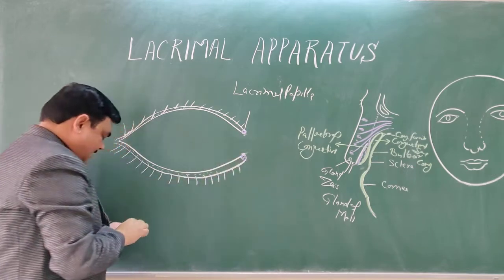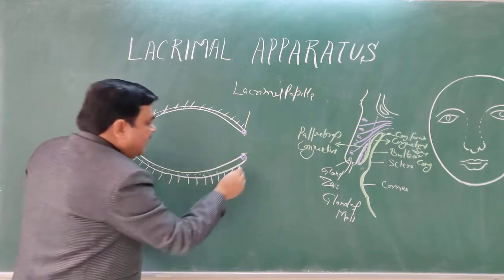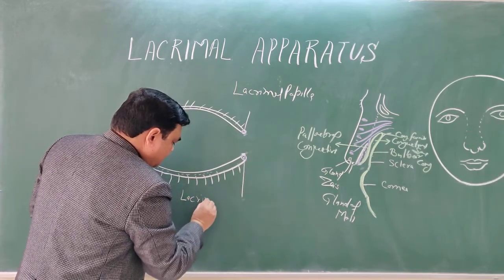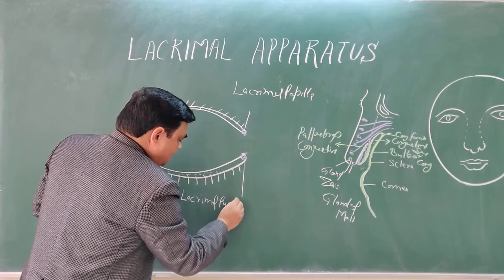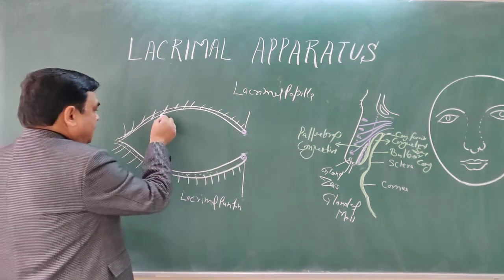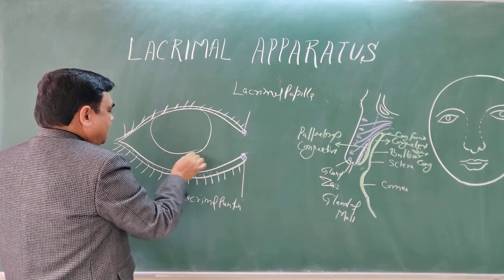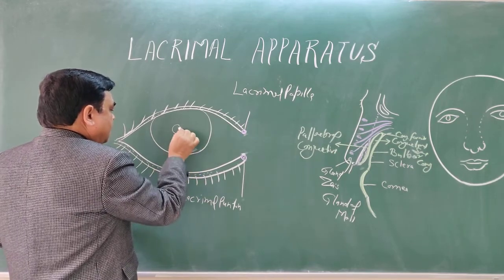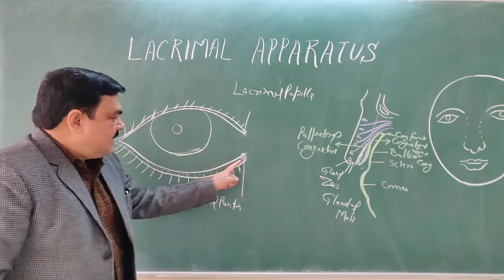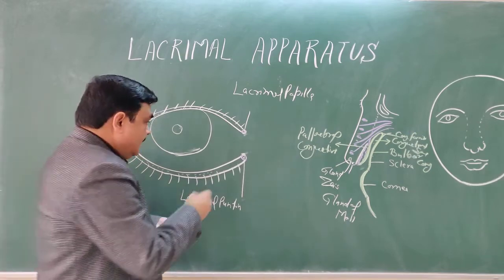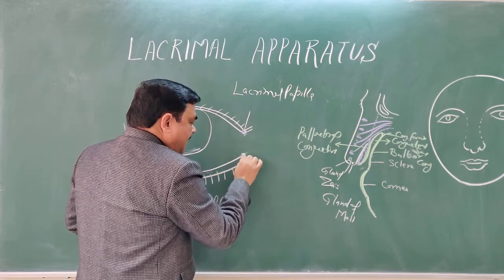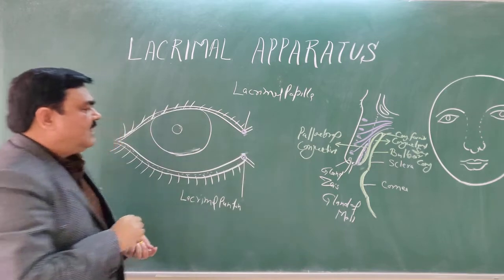This small elevation is the lacrimal papilla. In the center of the lacrimal papilla there is a small opening known as the lacrimal punctum. From here, the lacrimal punctum continues with the lacrimal canaliculi.